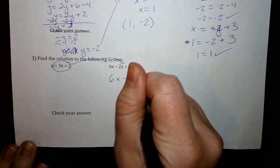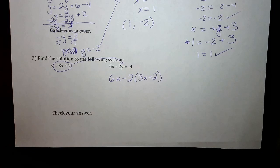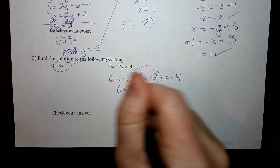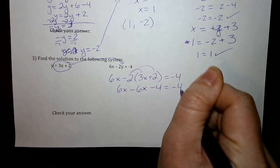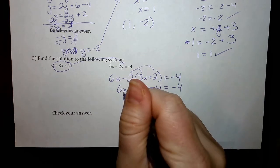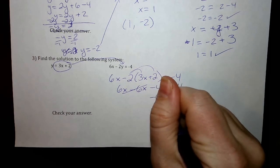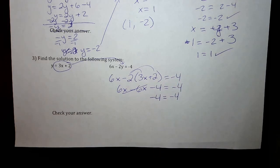So I have 6x minus 2. I'm substituting y was equal to 3x plus 2. So I took away the y and I substituted in 3x plus 2 equals negative 4. Now I'm going to distribute. So I get negative 6x minus 4. Now I combine my like terms. 6x minus 6x. Those actually cancel out.